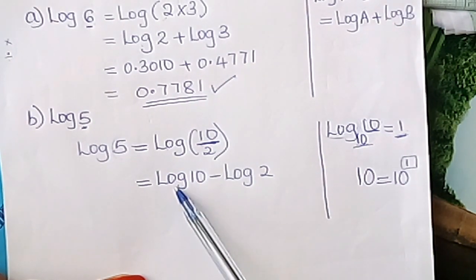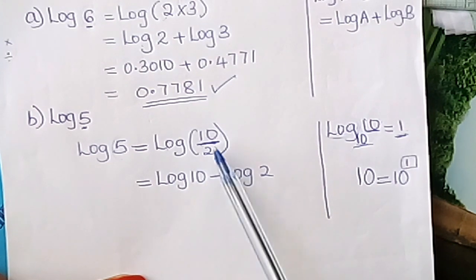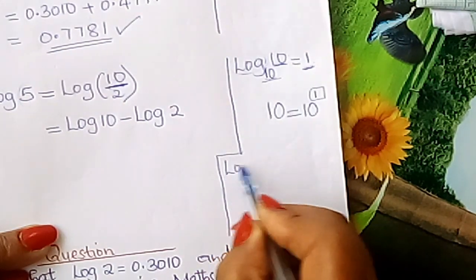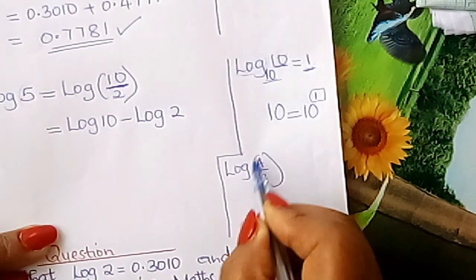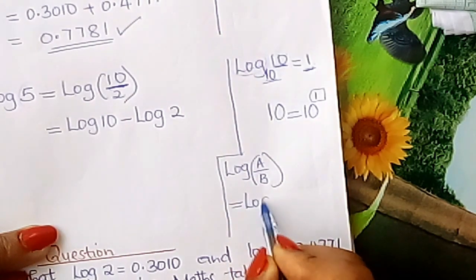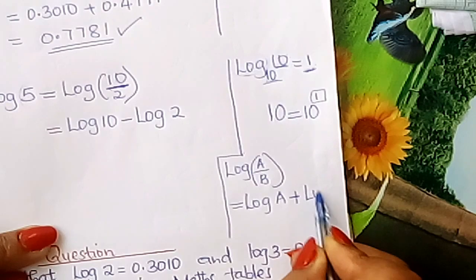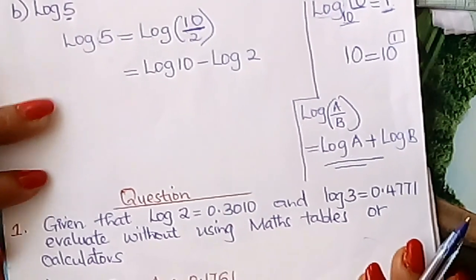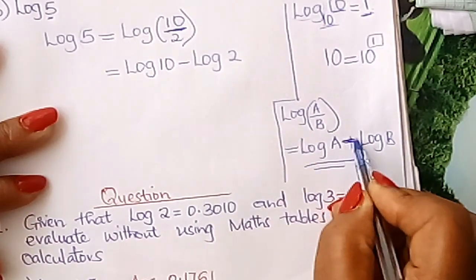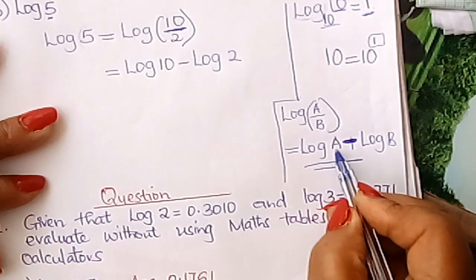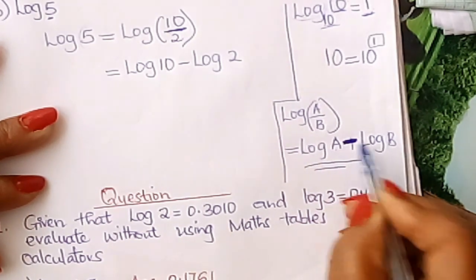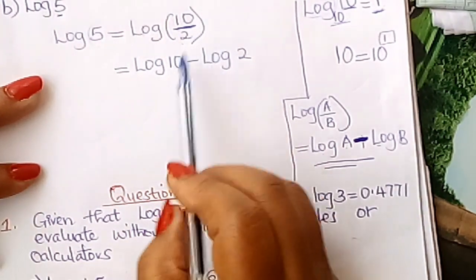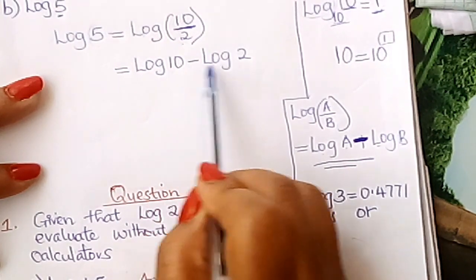Log 5 is the same as log 10 over 2. And therefore, using the law of logarithm, this is log 10 minus, if it is division there, it is minus. Maybe I can write that law here. Log A divided by B learner, it is the same as log A minus log B. This is the law that I'm talking about. Log 10 over 2 learner is the same as log 10 minus log 2.